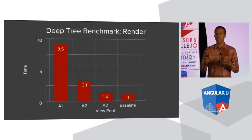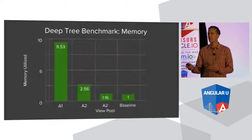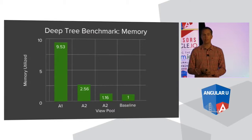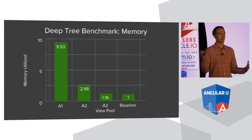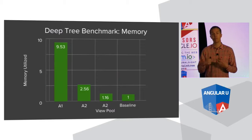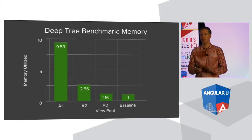Angular 2 with the view pool — once your application is loaded, for all common operations like scrolling, creating new items in a repeater, and switching between views — we're very close to the baseline. In addition to raw performance, we're actually even better on memory. This is really important if you've got a very large desktop application or if you're building for mobile, where you have much less memory at your disposal.